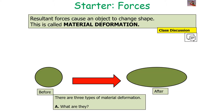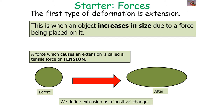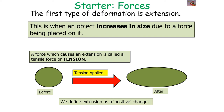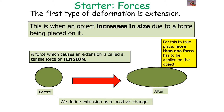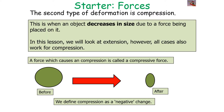Resultant forces can cause an object to change shape, which is called material deformation. There are three types of material deformation. The first type is extension — this is when an object increases in size due to the deforming force placed upon it. A force which causes an extension is called a tensile force, or tension. When tension is applied to an object, the extension is a positive change and the object has increased in size. For this to take place, more than one force has to be applied. The second type of deformation is compression — this is when an object decreases in size due to a force placed upon it. In this lesson we'll mostly look at extension, however all cases also work for compression.